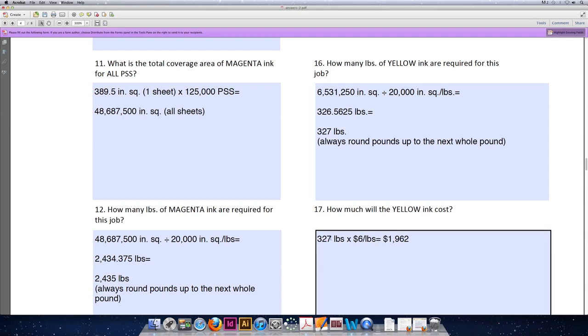And then we'll multiply 327 pounds times $6 for every one pound of ink to get a total ink price of $1,962 for yellow ink.